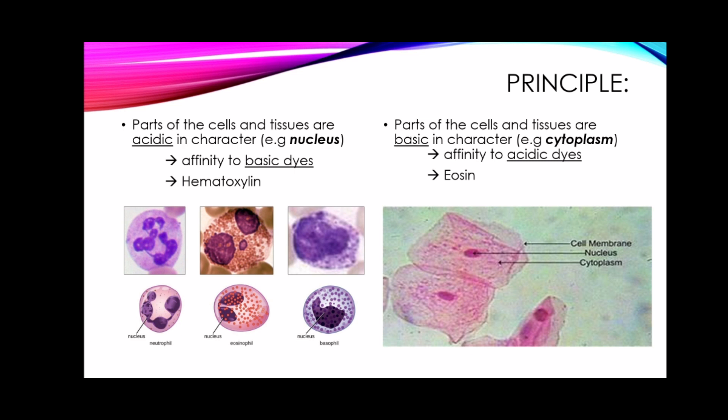Individual variation of the tissue constituents regarding these properties will consequently produce variation in colors under the microscope. In general, microscopic examination is facilitated if two contrasting stains are used: hematoxylin, which stains the nuclear detail, and eosin, which brings out the cytoplasmic detail of the cell and the tissue's architecture.